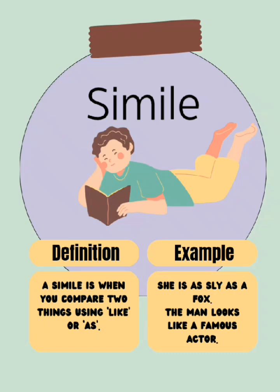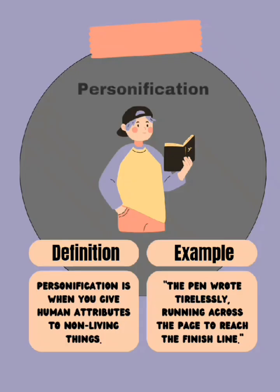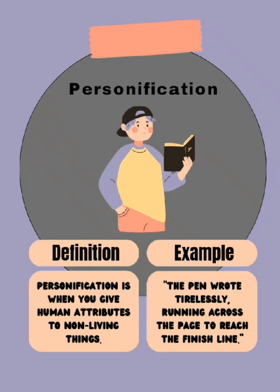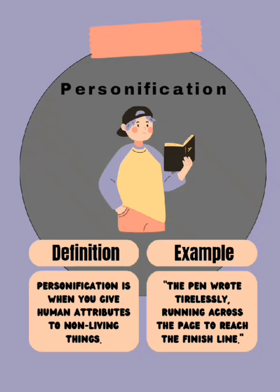The next is personification. This is attributing human qualities to inanimate objects — treating something that is inhuman as though it is human. We have the example on the slide: 'The pen wrote tirelessly.' How can a pen write? That's personification.